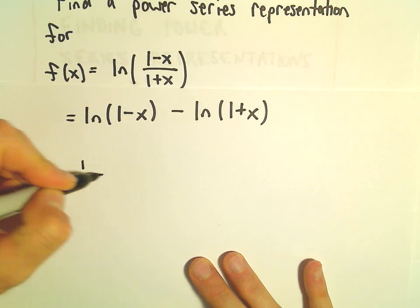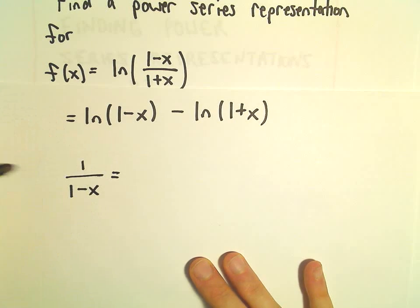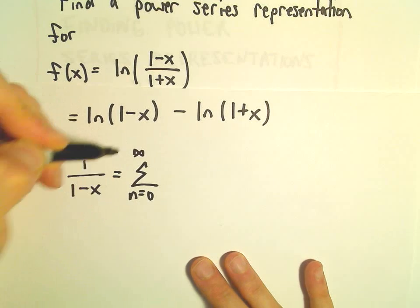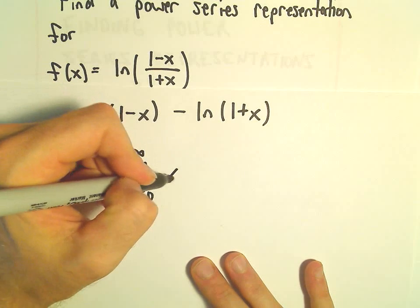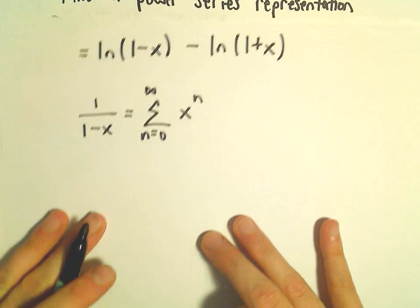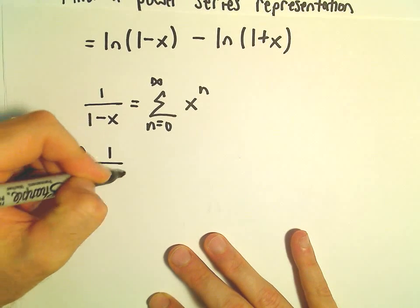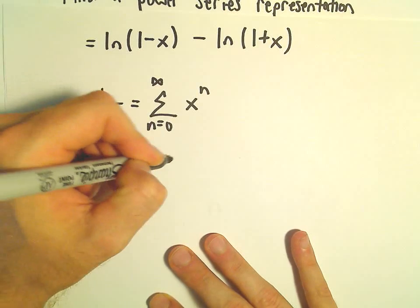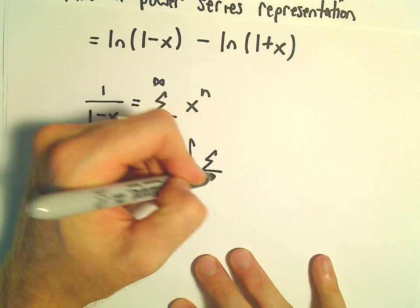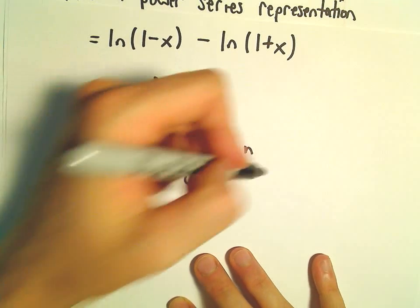So 1 over (1 minus x) we can write as the series n equals 0 to infinity of x raised to the n. The observation is, if we integrate 1 over (1 minus x), we'll integrate the right side as well — the summation n equals 0 to infinity of x raised to the n.